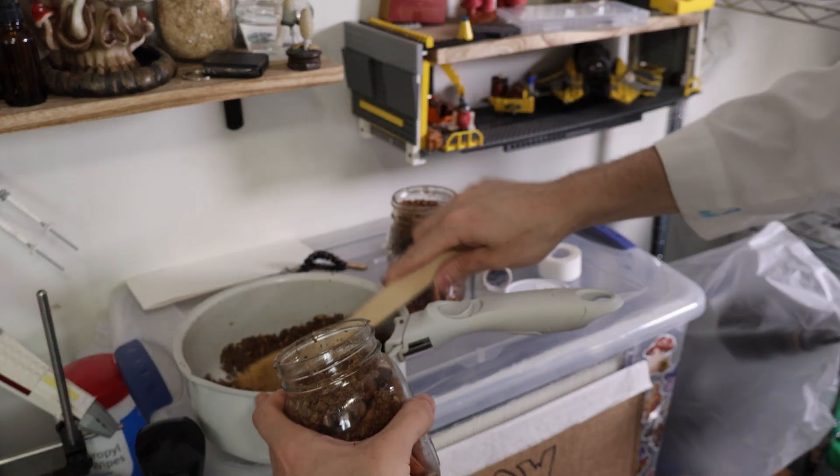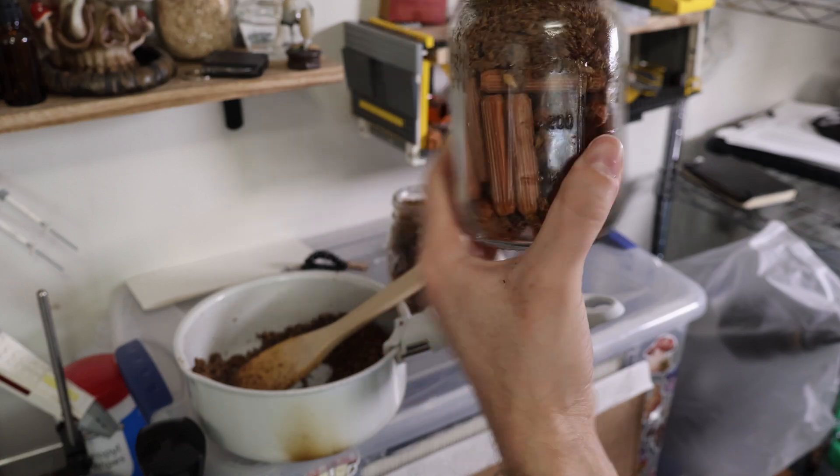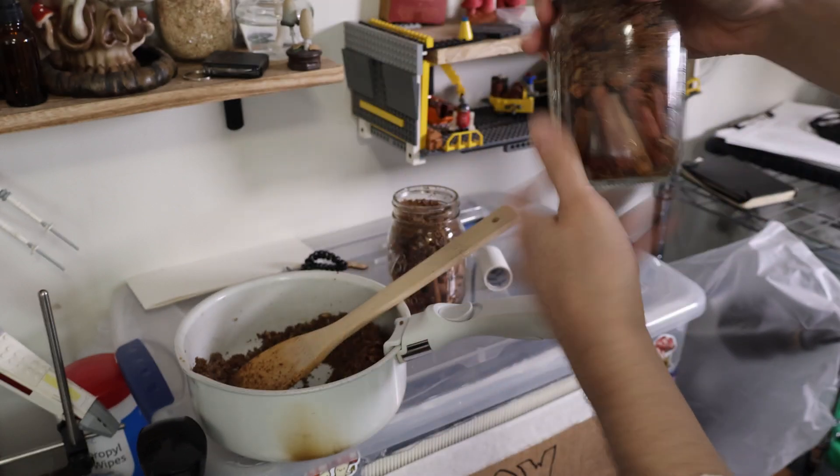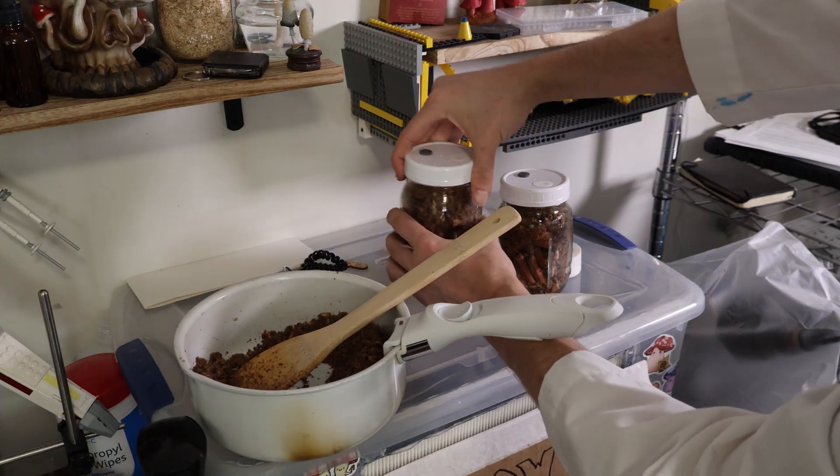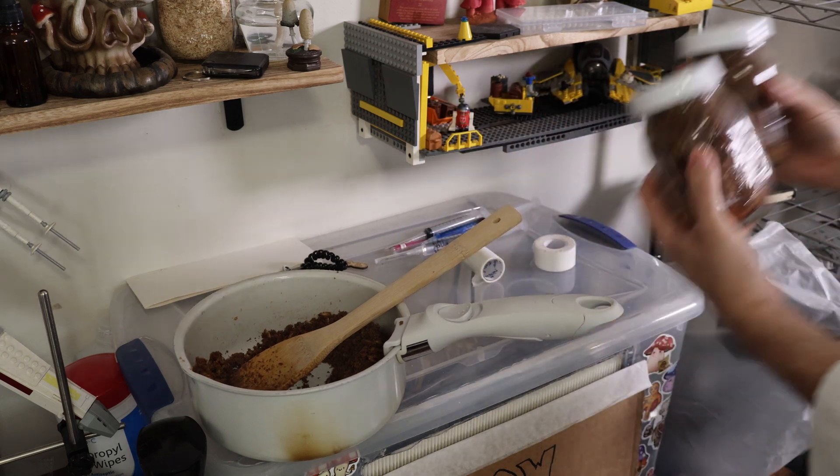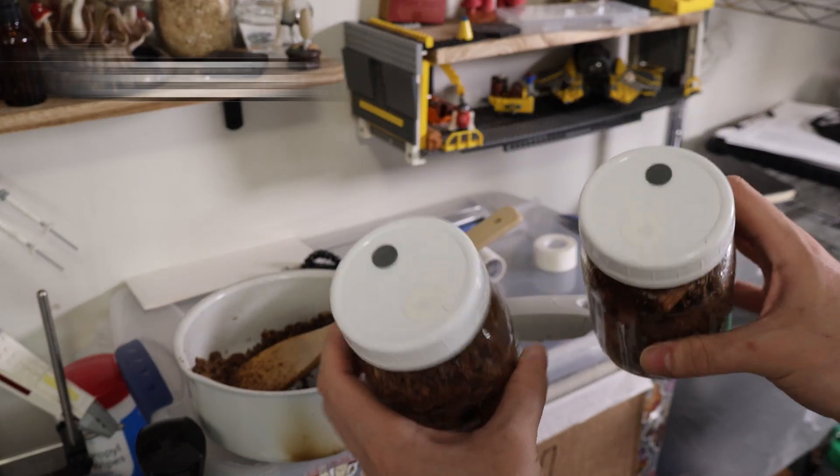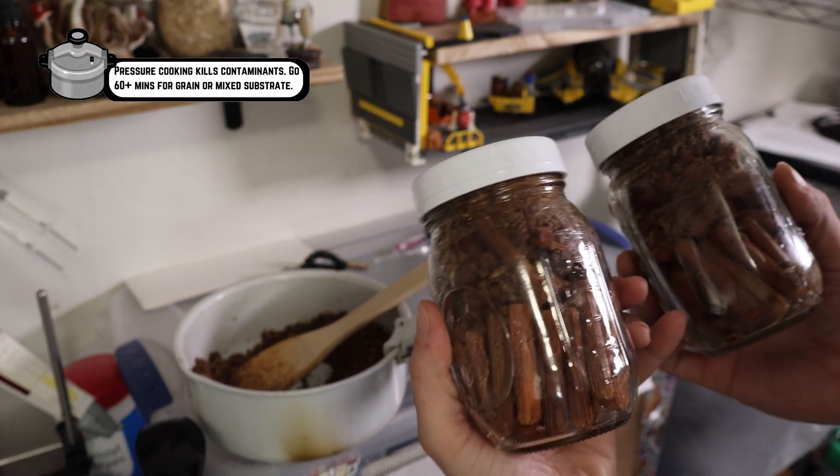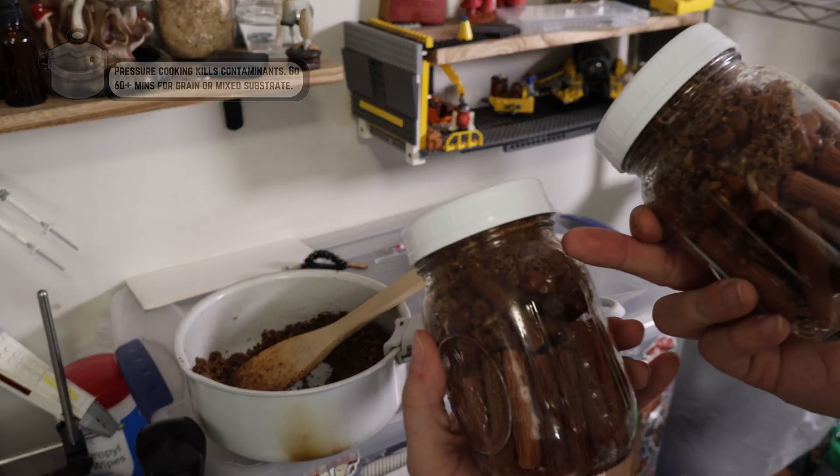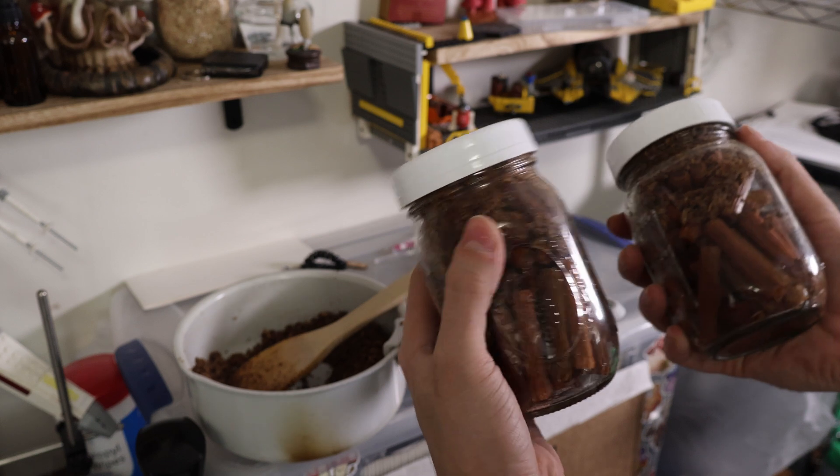Don't want to pack it down too tight. And that should be good for both of these jars. Throw a nice lid on. Now we can go cover these with aluminum foil and pressure cook. I'm going to send them probably for an hour just to be safe, just because of those oats that I have in the top. At least an hour.